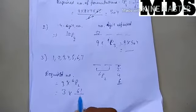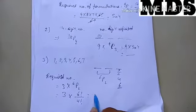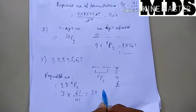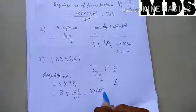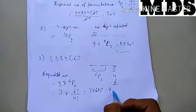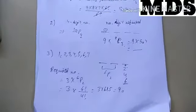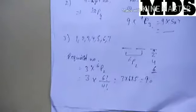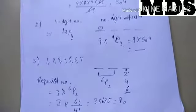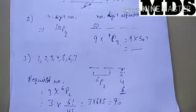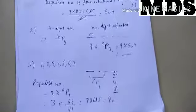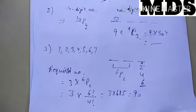So the required number of words will be 3 × 6P2. This means 6 factorial divided by 4 factorial, which is 3 × 6 × 5 = 90.